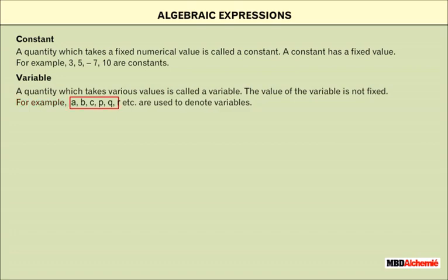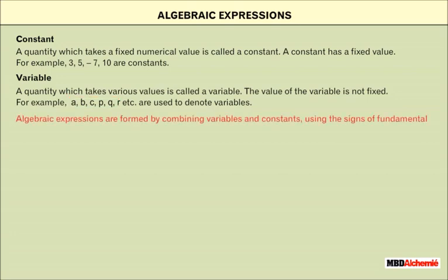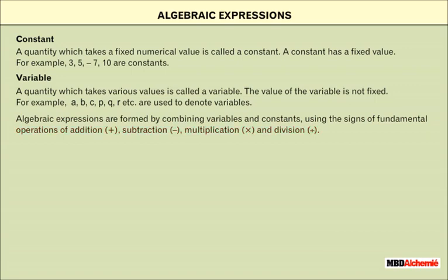Algebraic expressions are formed by combining variables and constants using the signs of fundamental operations of addition, subtraction, multiplication, and division. For example, 2x plus 5, 2a plus 3b plus 4c are algebraic expressions.